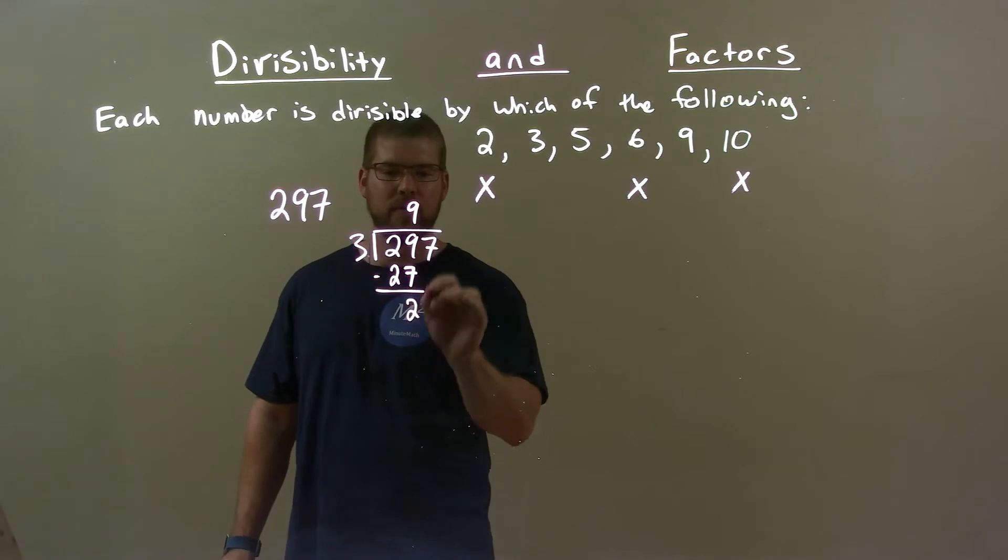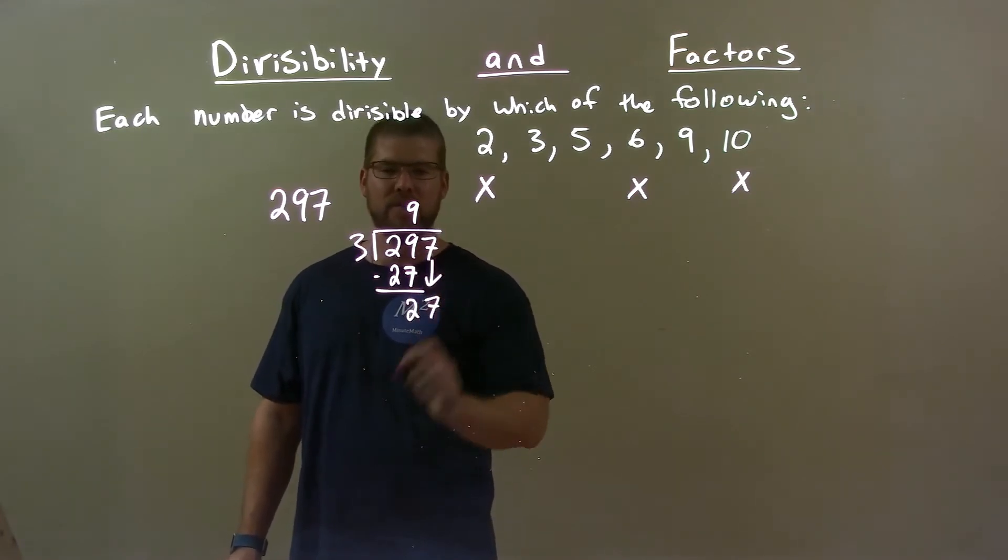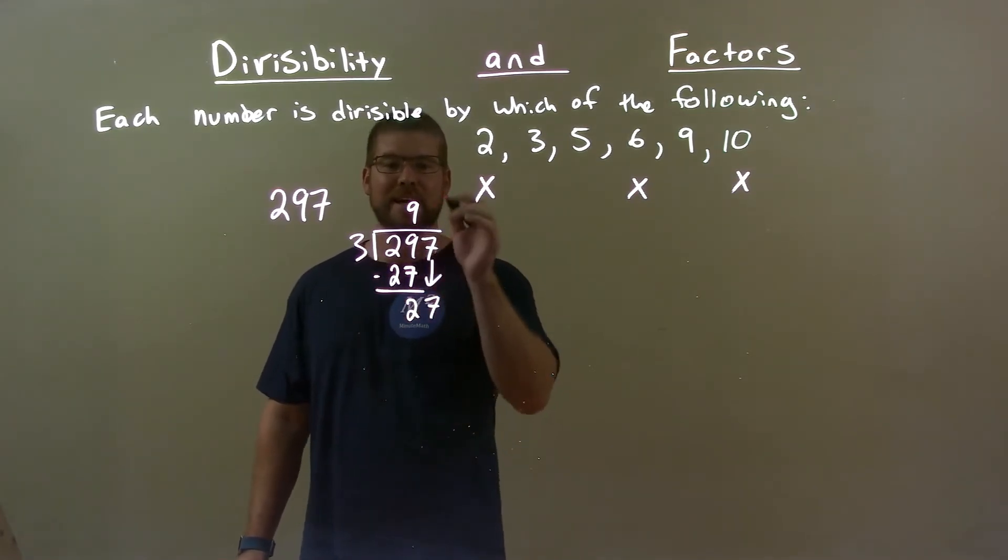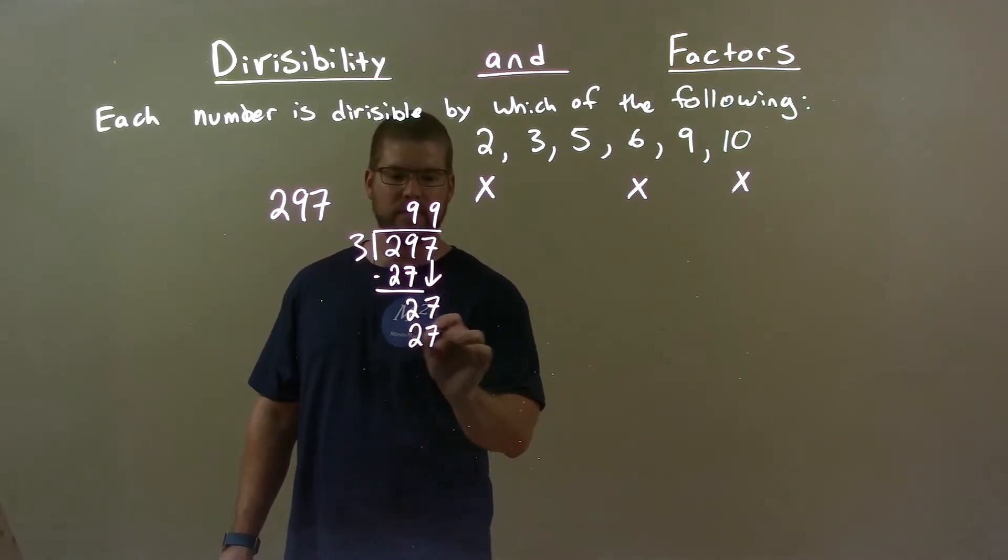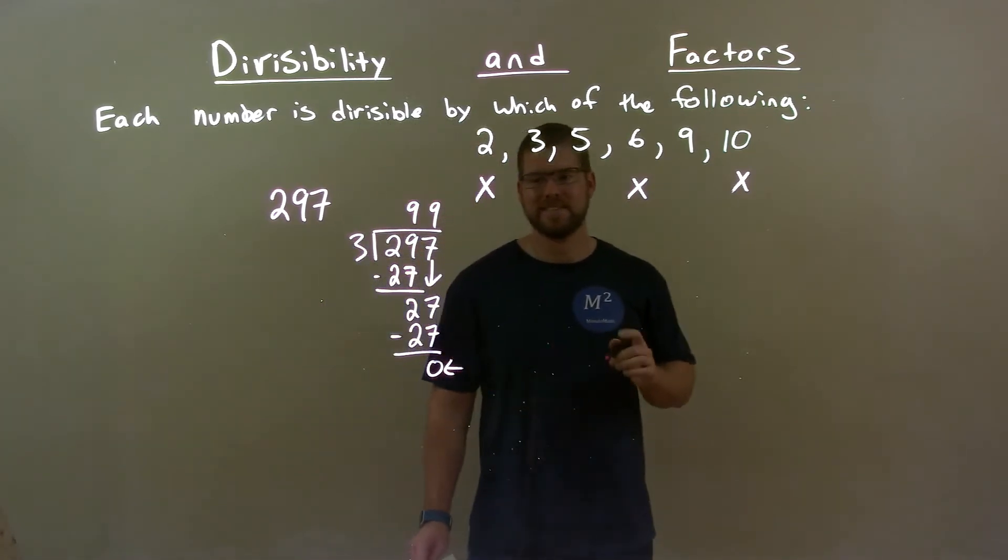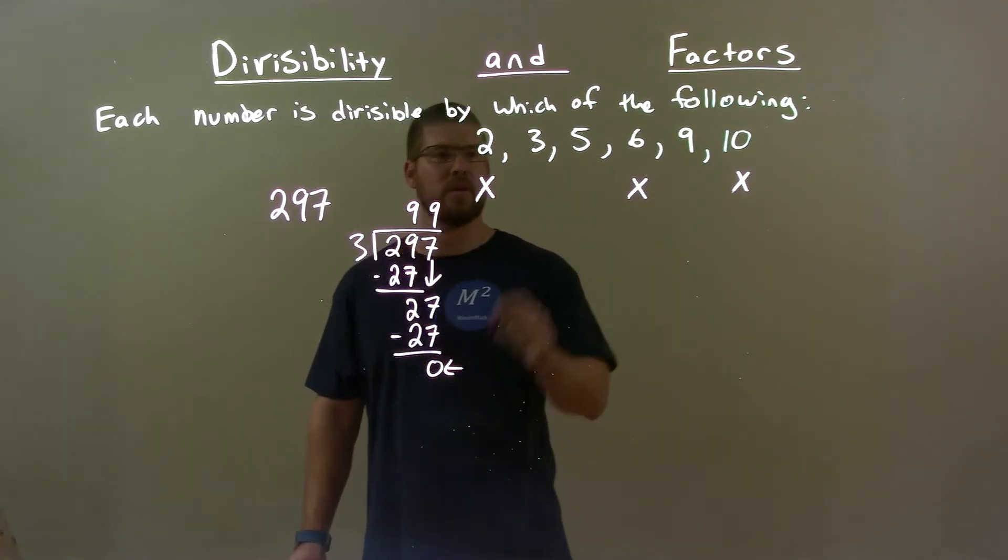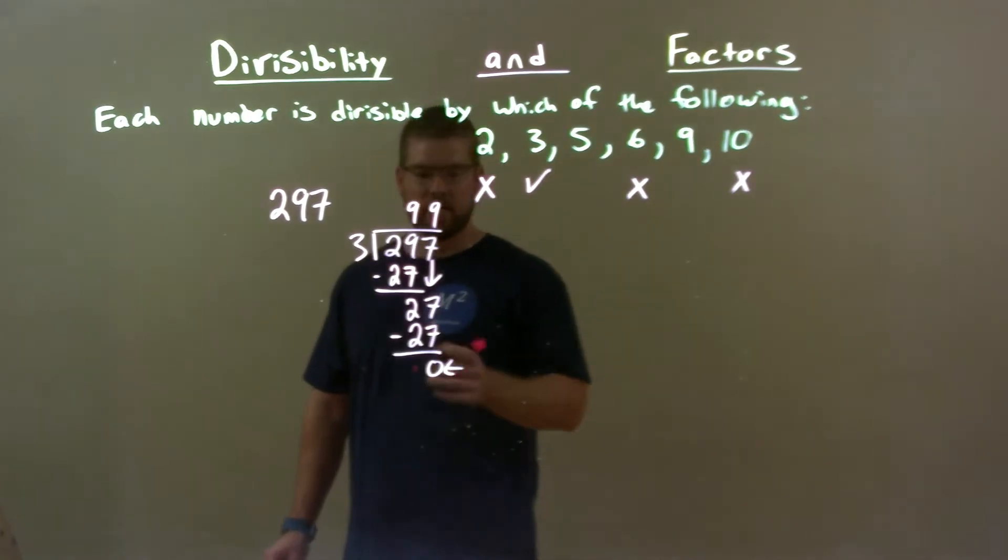Subtract the 2, we got a 2. Bring down this 7. 3 goes into 27, 9 times as well. 9 times 3 is 27, and we got a 0. Since we have a remainder of 0 here, 3 works.